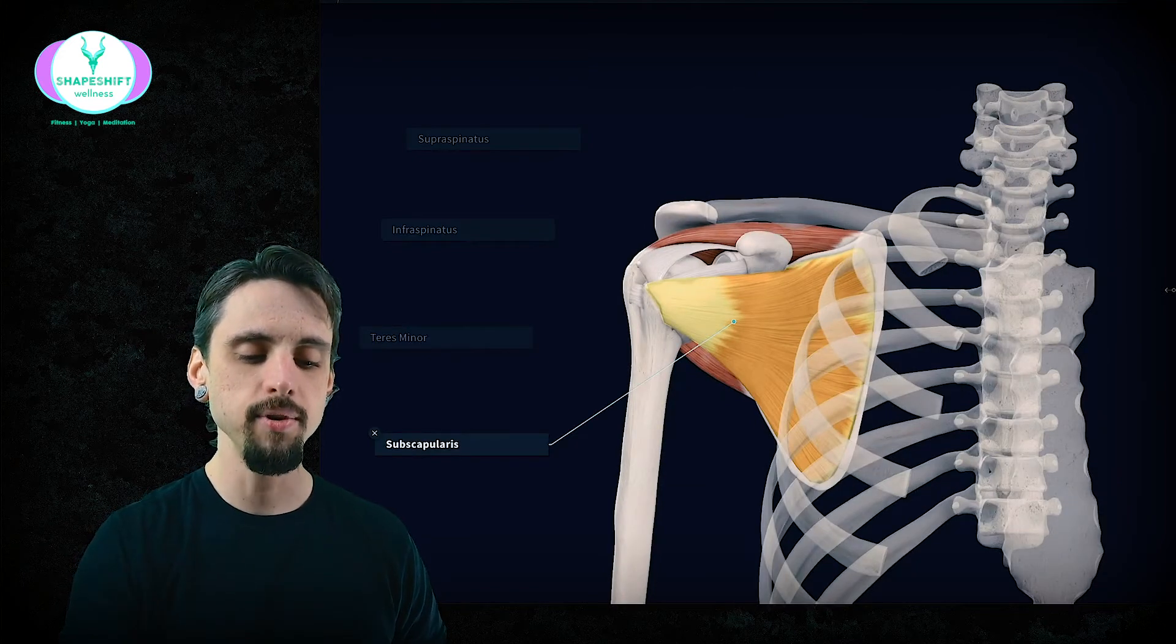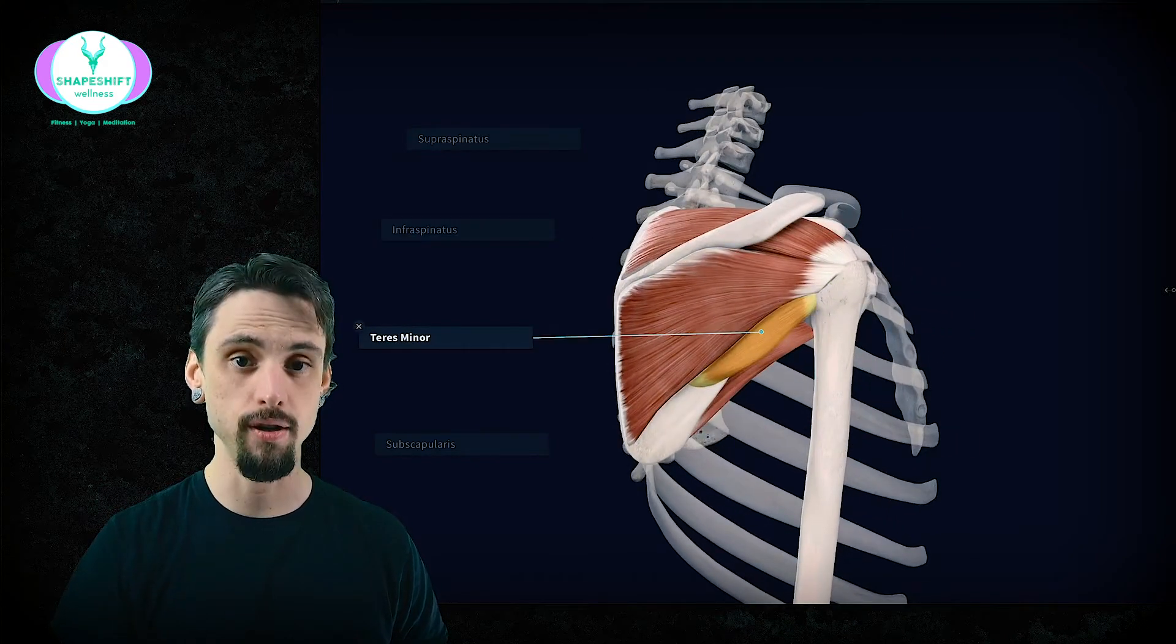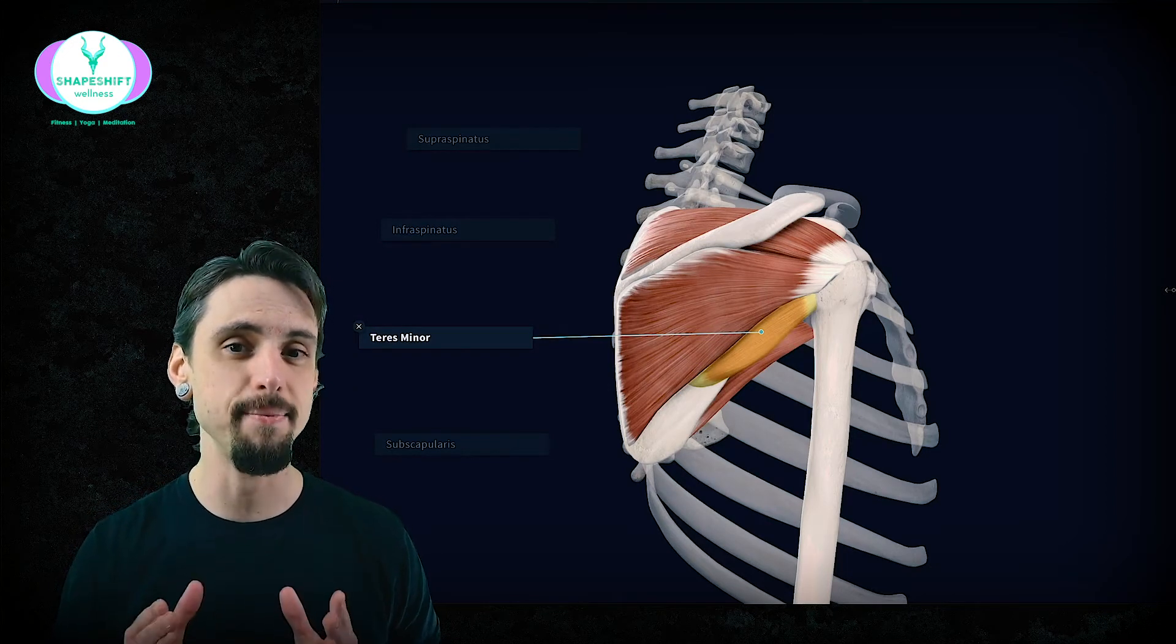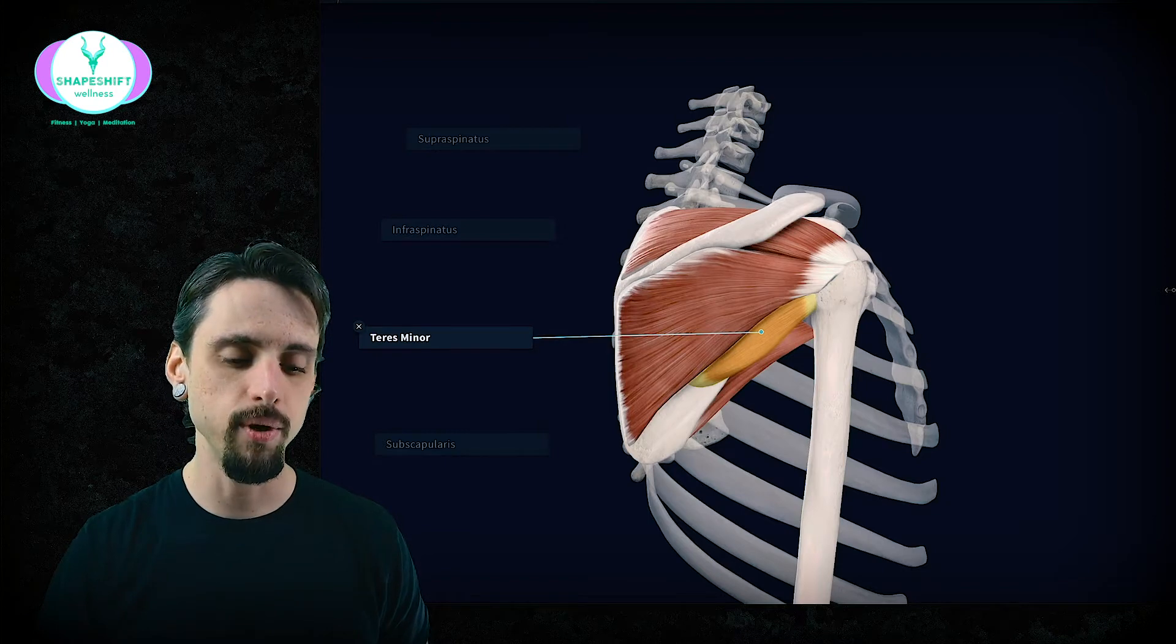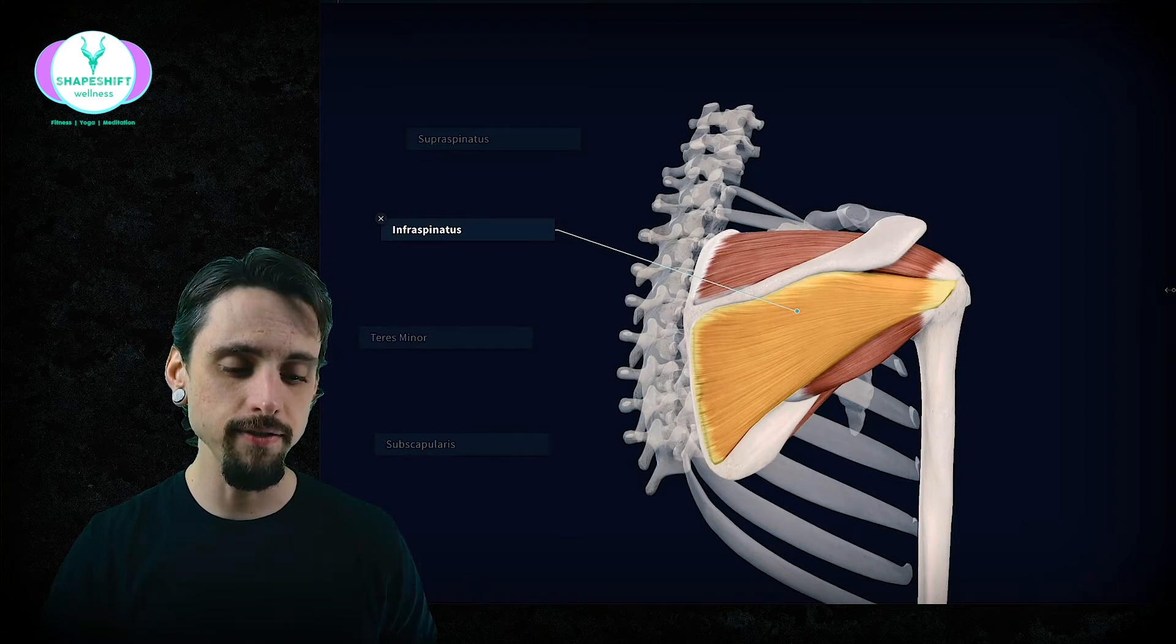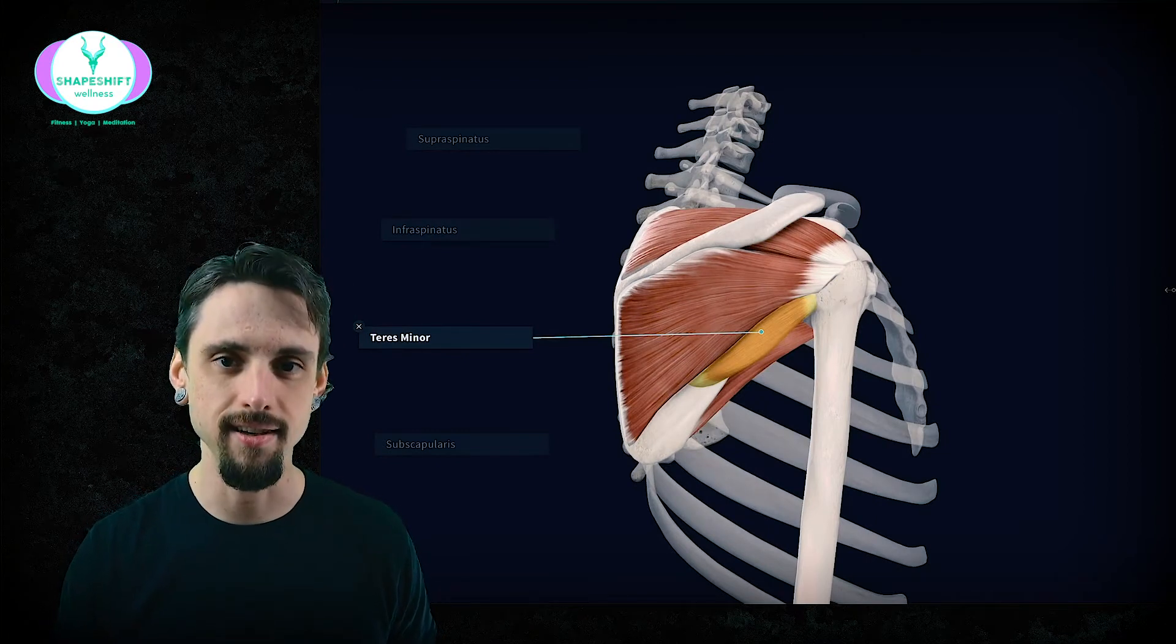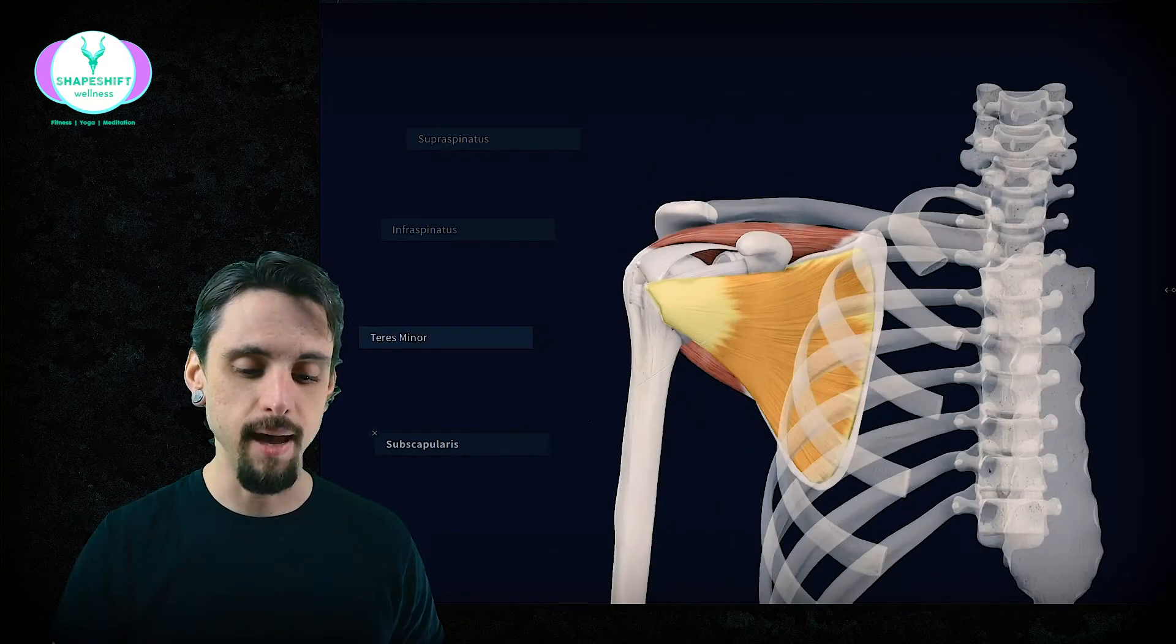So one more time: supraspinatus, infraspinatus, teres minor—and if you're trying to remember if it's the major or the minor that's part of the rotator cuff, because there is a teres major as well and it is not part of the rotator cuff. If you're trying to remember which one, I just remember that infraspinatus is part of the rotator cuff and infraspinatus starts with an I, and teres minor has an I in it. Teres major does not have an I. So that's honestly how I remember it. And subscapularis.